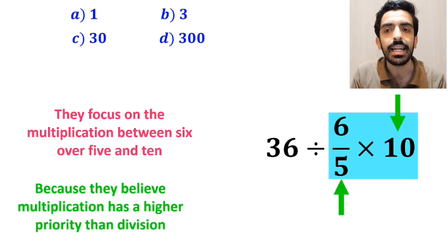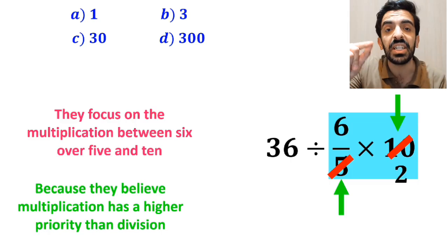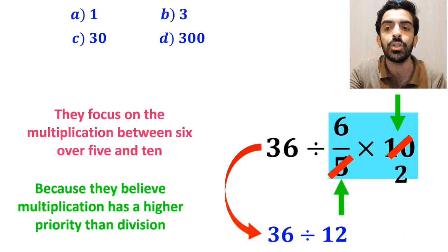As you can see on the screen, they simply cancel out 10 with the 5 in the denominator, and this expression simplifies to 36 divided by 12, which finally gives them the answer 3.